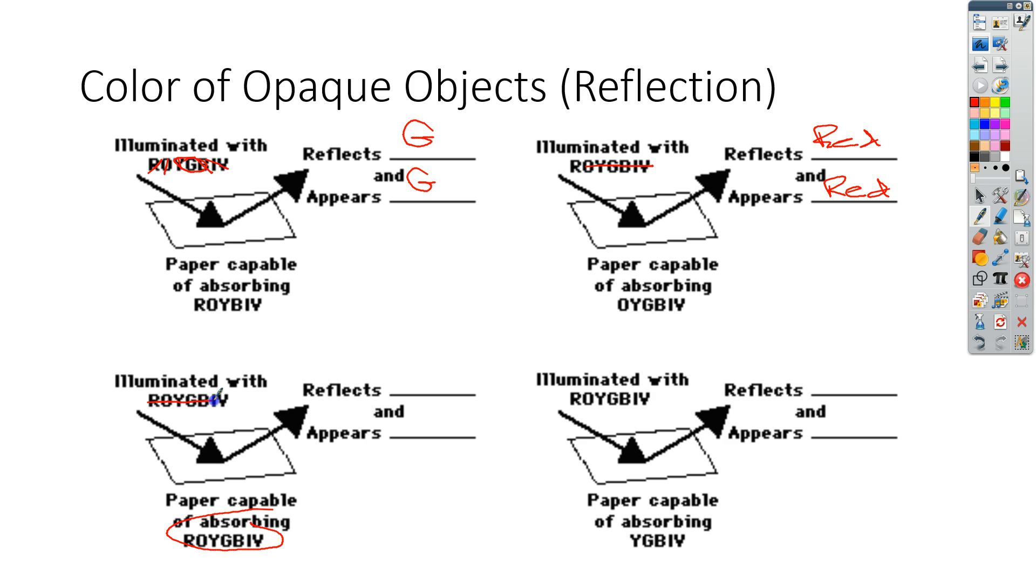So we're going to take all of the colors off here, and therefore we say that it reflects no color, and it actually will then appear black. The absence of color is black.